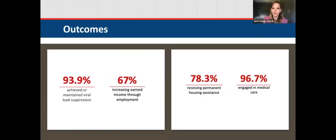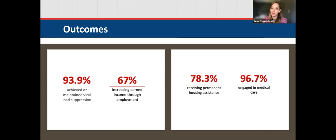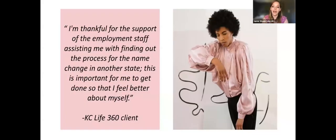Here are outcomes: nearly 94% of folks in this program achieved or maintained viral load suppression, which is huge. 67% increased their earned income through some form of employment. We got 78 to receive permanent housing assistance, and nearly 98% were engaged in care. And we have voices from folks as well — here we have one of our KCLive360 clients.